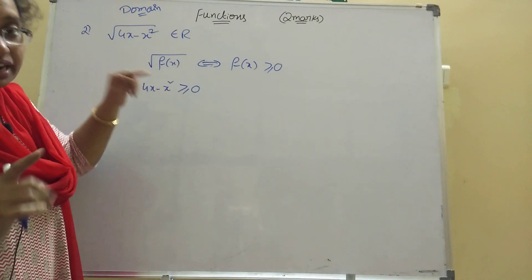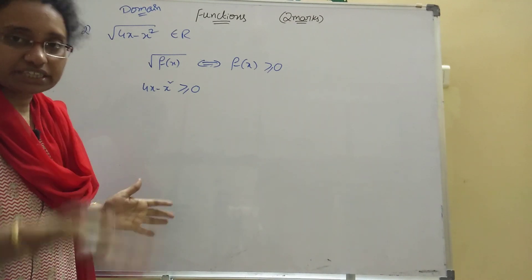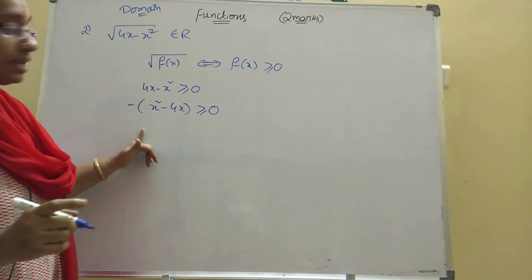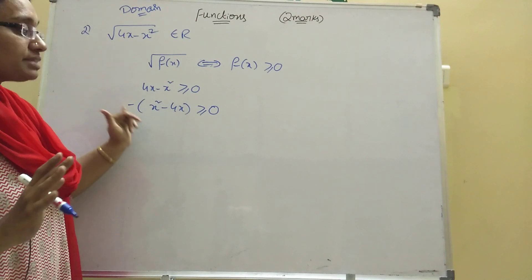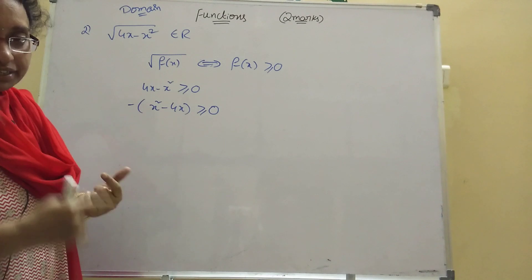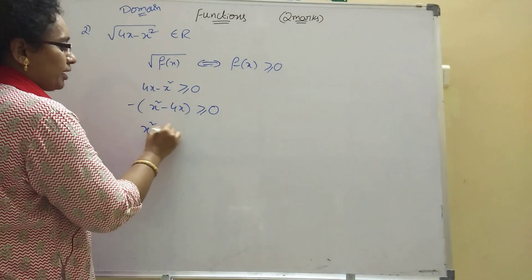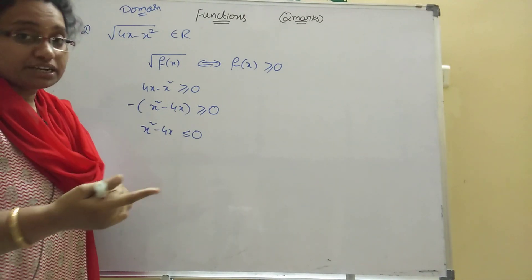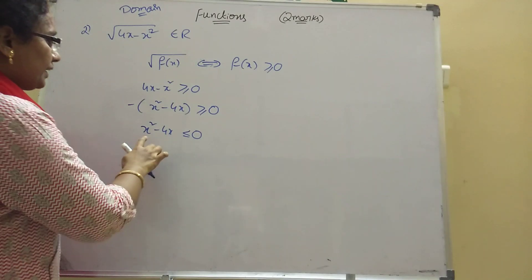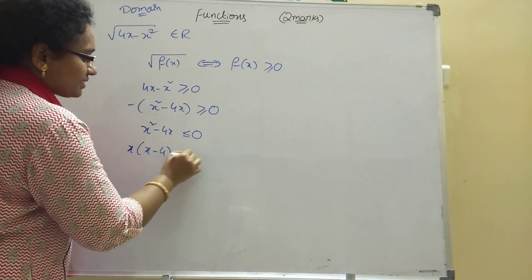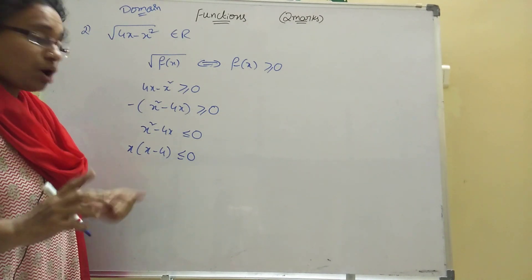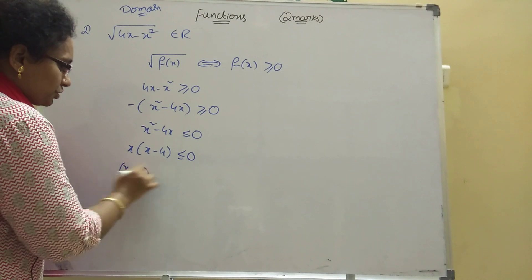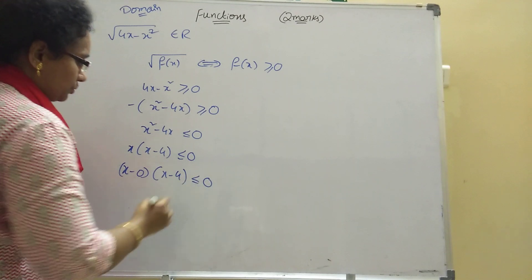Taking minus common: -(x² - 4x) ≥ 0. When we remove the minus by dividing, the sign changes — greater than or equal to becomes less than or equal to. So x² - 4x ≤ 0. Taking x common: x(x - 4) ≤ 0. Writing as (x - 0)(x - 4) ≤ 0, so alpha = 0 and beta = 4.